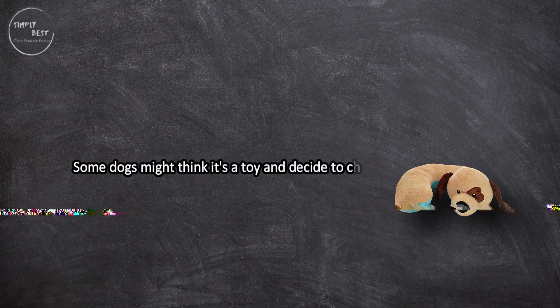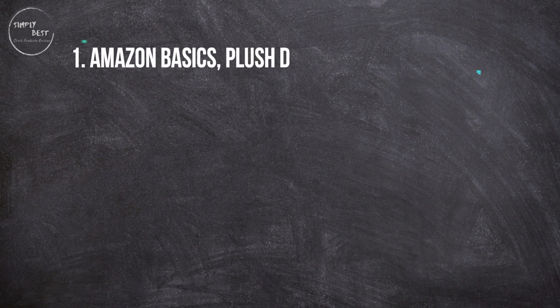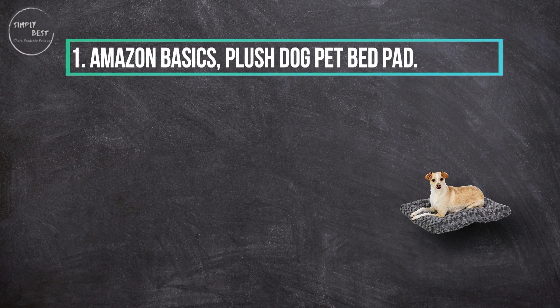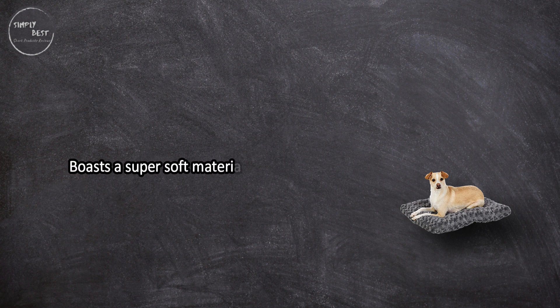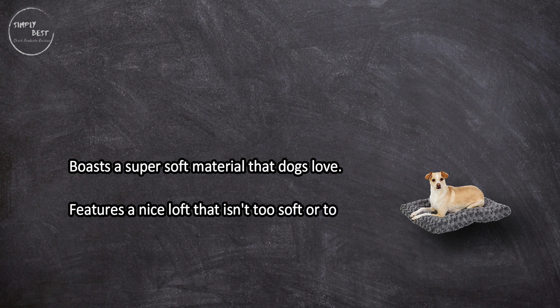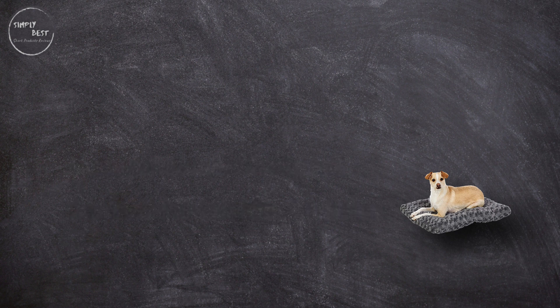At number one: Amazon Basics Plush Dog Pet Bed Pad. Boasts a super soft material that dogs love. Features a nice loft that isn't too soft or too firm. Comes in several practical sizes to accommodate different breeds.